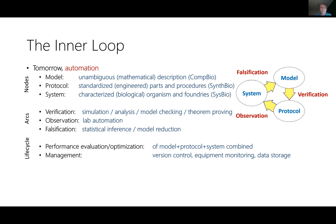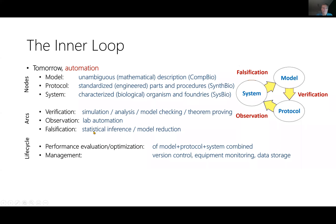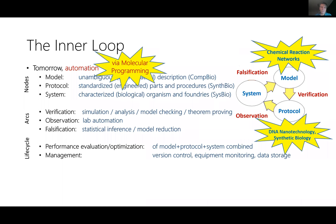Because of all these uncertainties in models, protocols, and systems, there is currently a real crisis in biology. A Nature article explains that experiments, even important ones, are often done once and never reproduced — and when people try to reproduce them, they usually run into problems. We would like to use automation to improve the situation. Models should be unambiguous mathematical descriptions — the realm of computational biology. Protocols should be standardized using engineered procedures — the realm of synthetic biology. Systems should be well-characterized biological objects — the realm of systems biology.